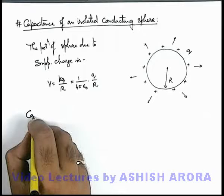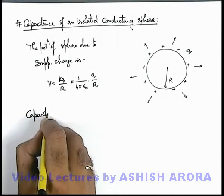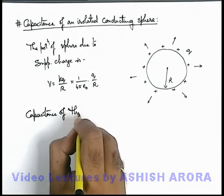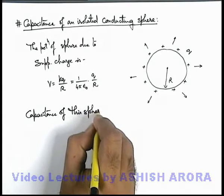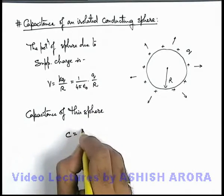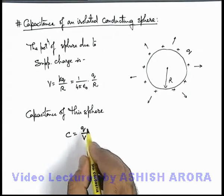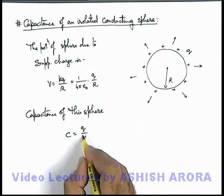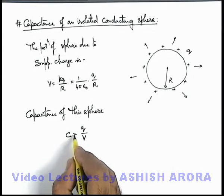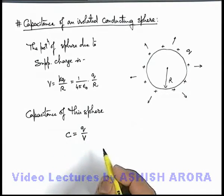The capacitance of this sphere can be written as C = q/V because we have studied that the charge on this sphere is proportional to its potential. Since q = CV, this capacitance can be written as q/V.